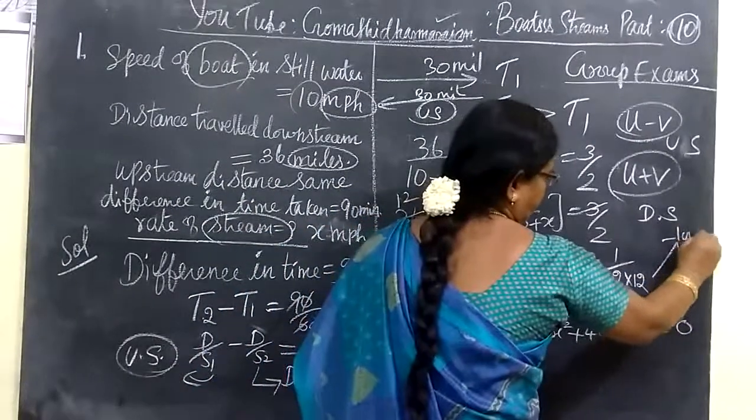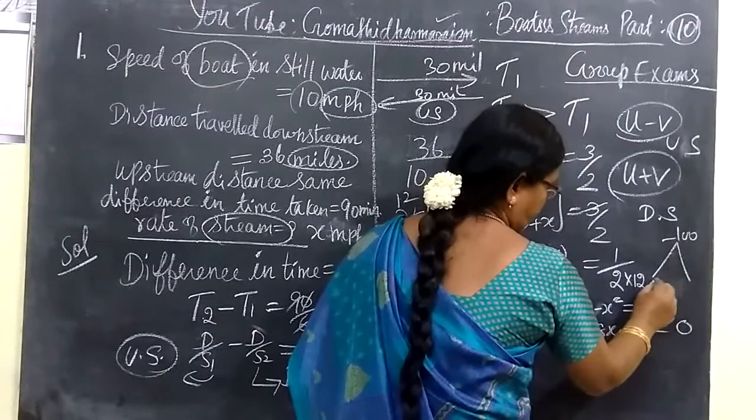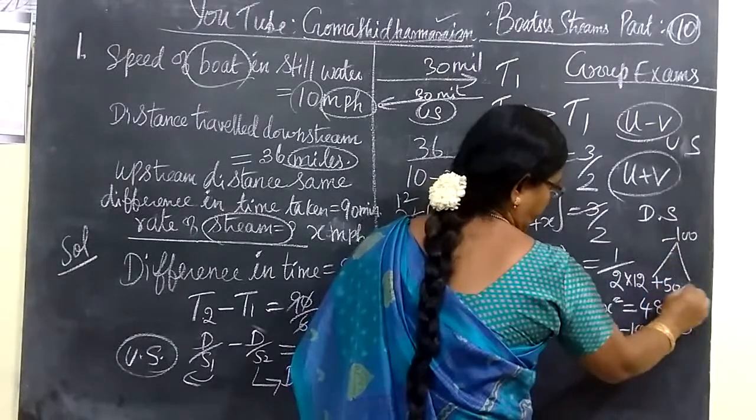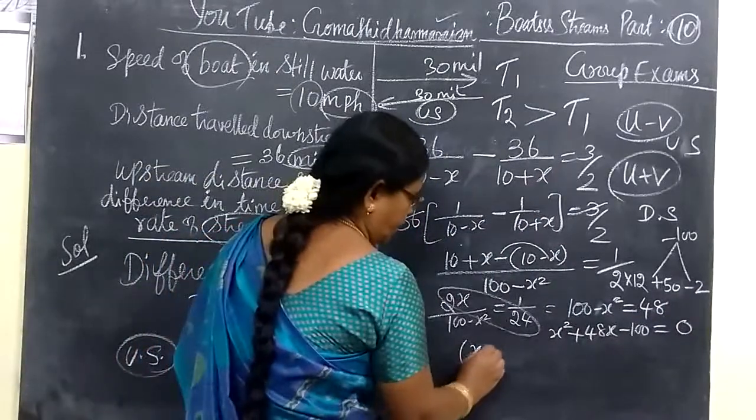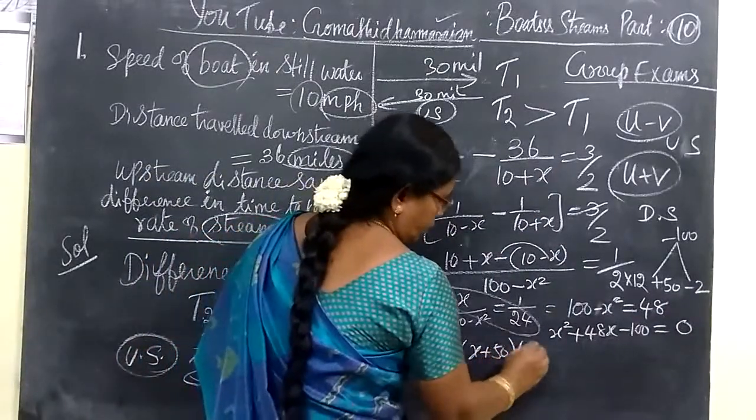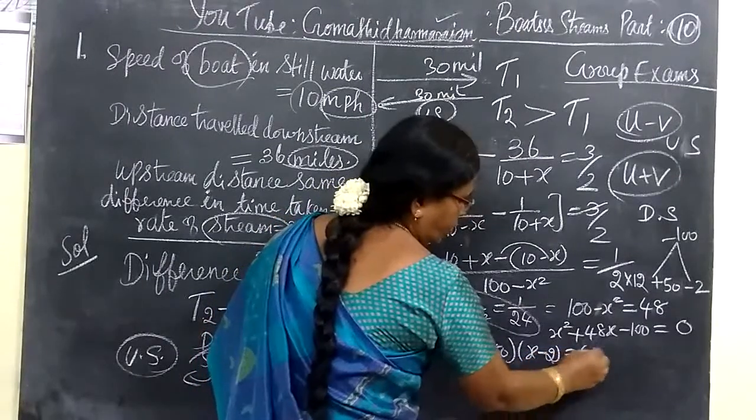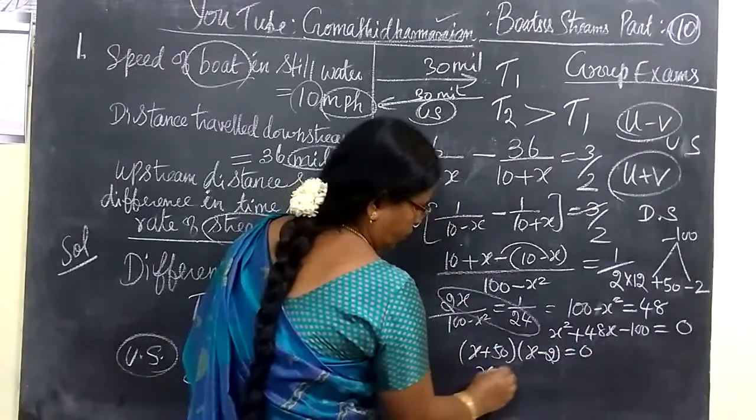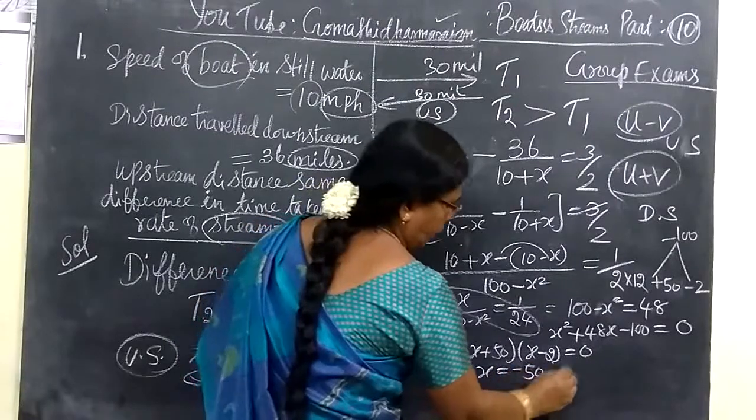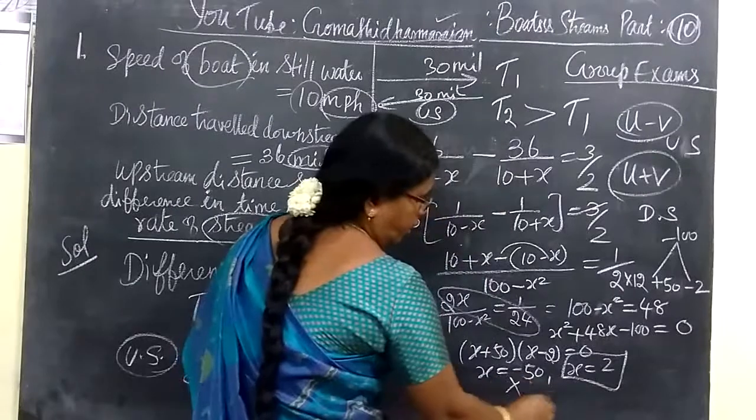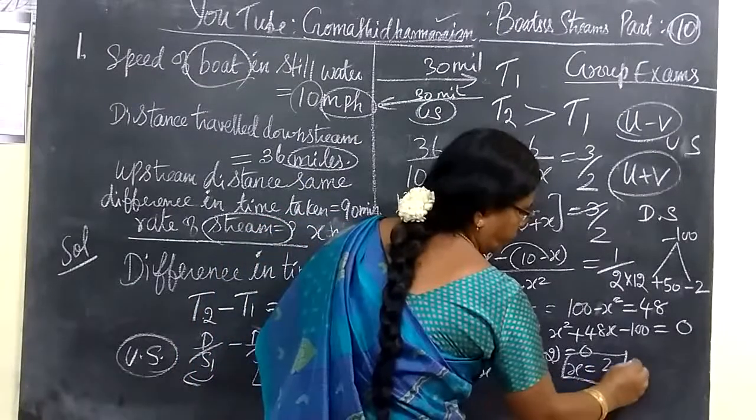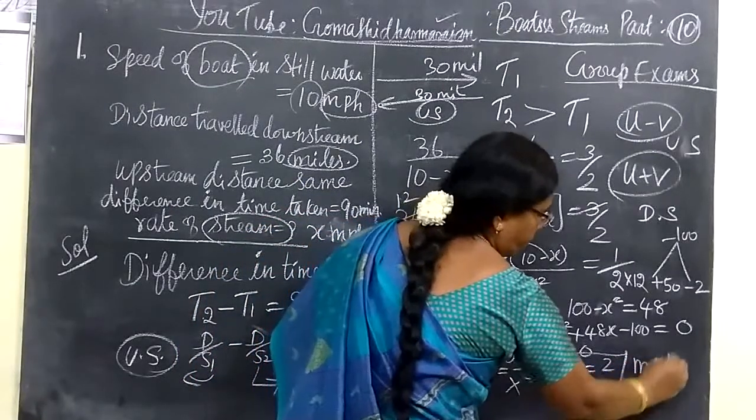Multiply as 48. So, you can get X squared plus 48X minus 100. X minus 50, X minus 2. So, X minus 50, X plus 52. X equals 2 miles per hour.